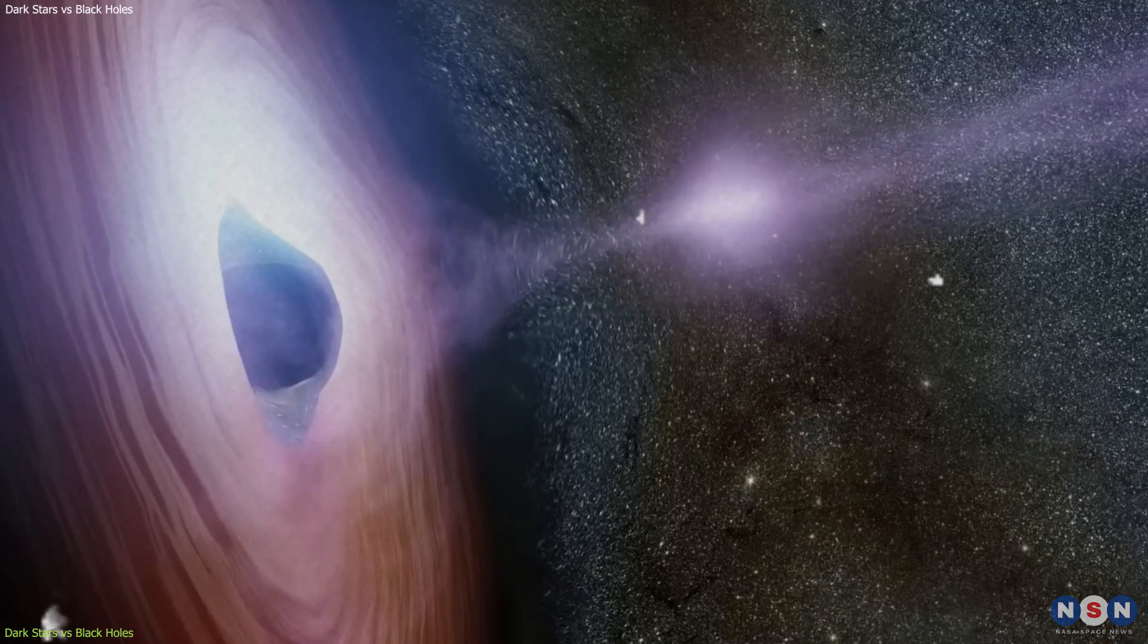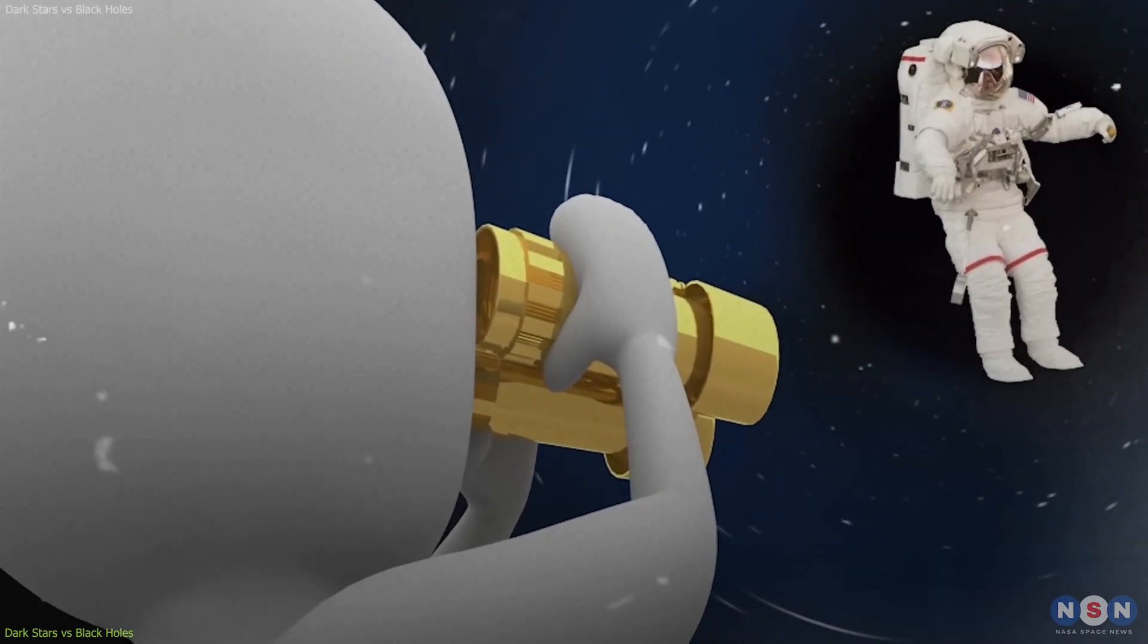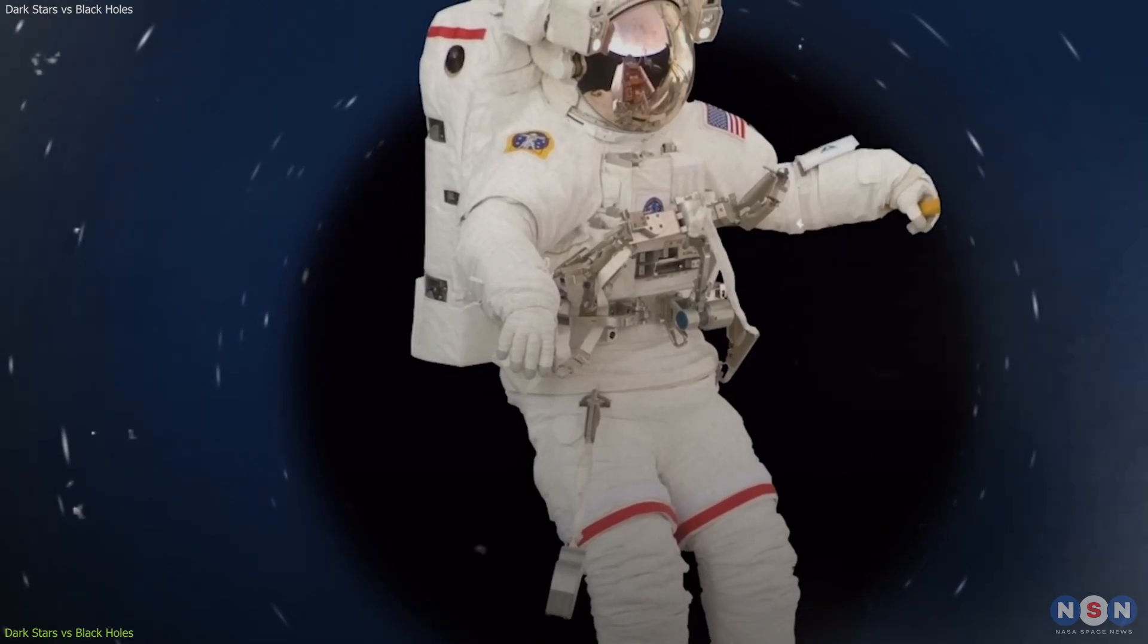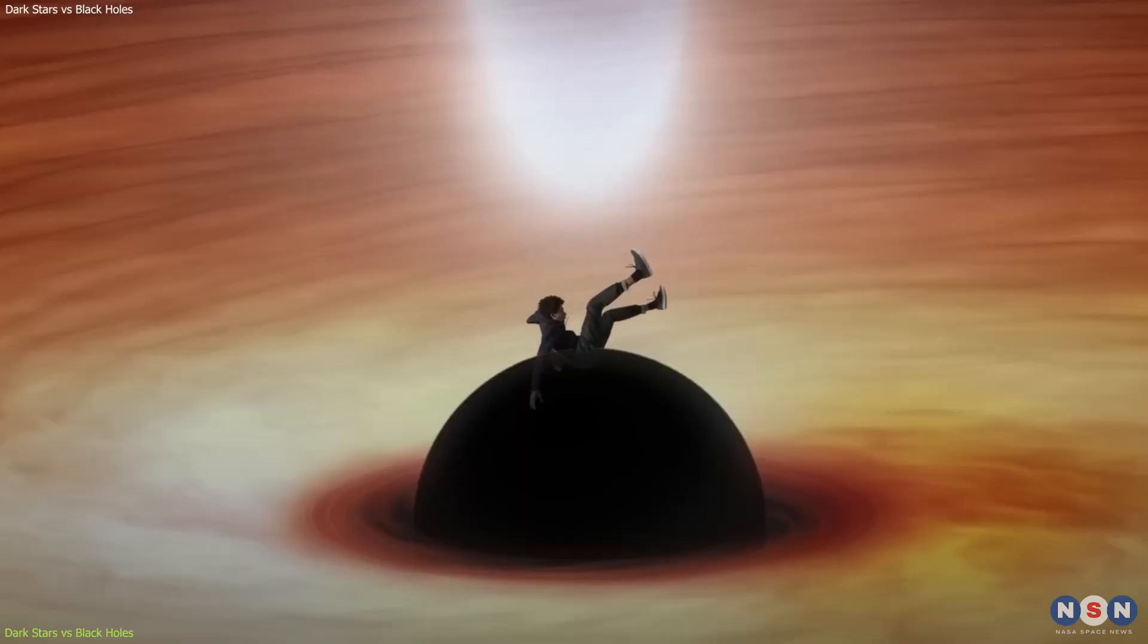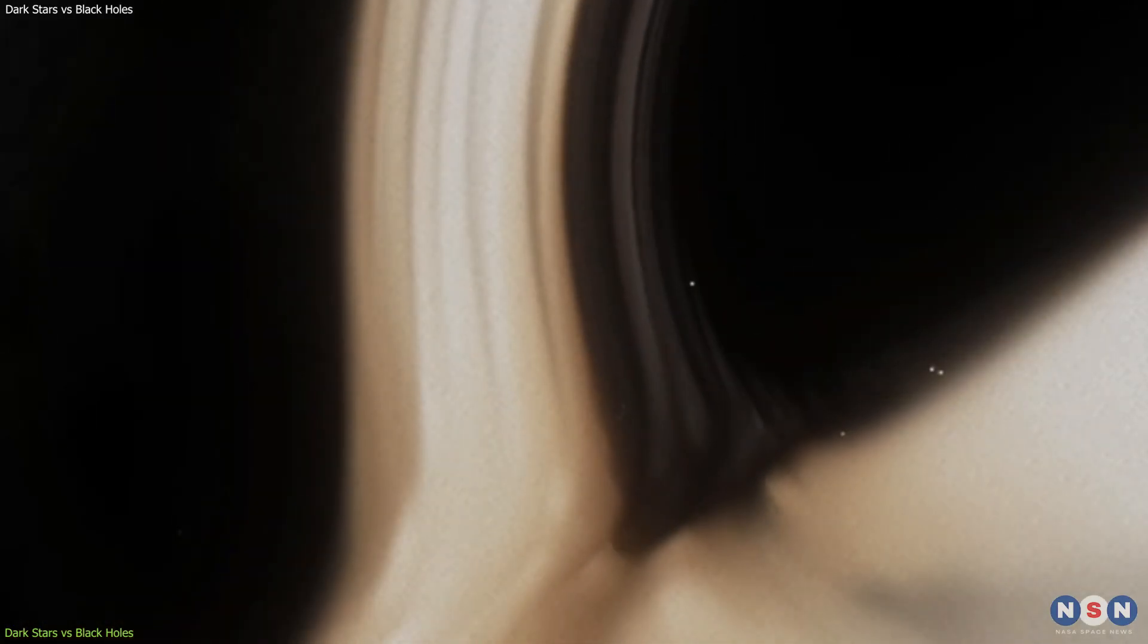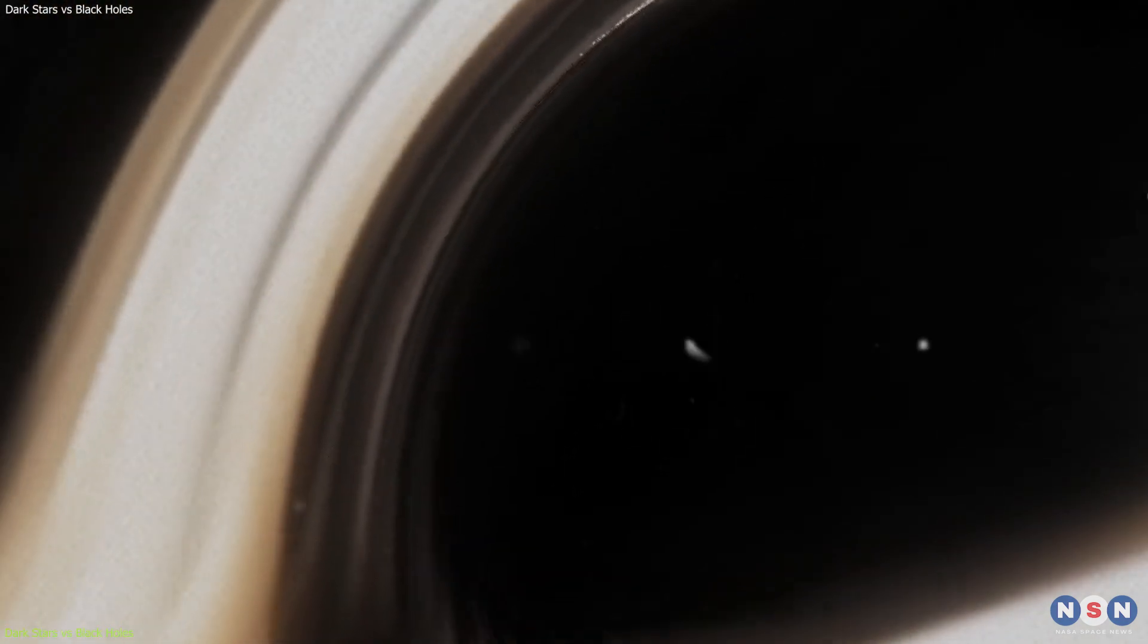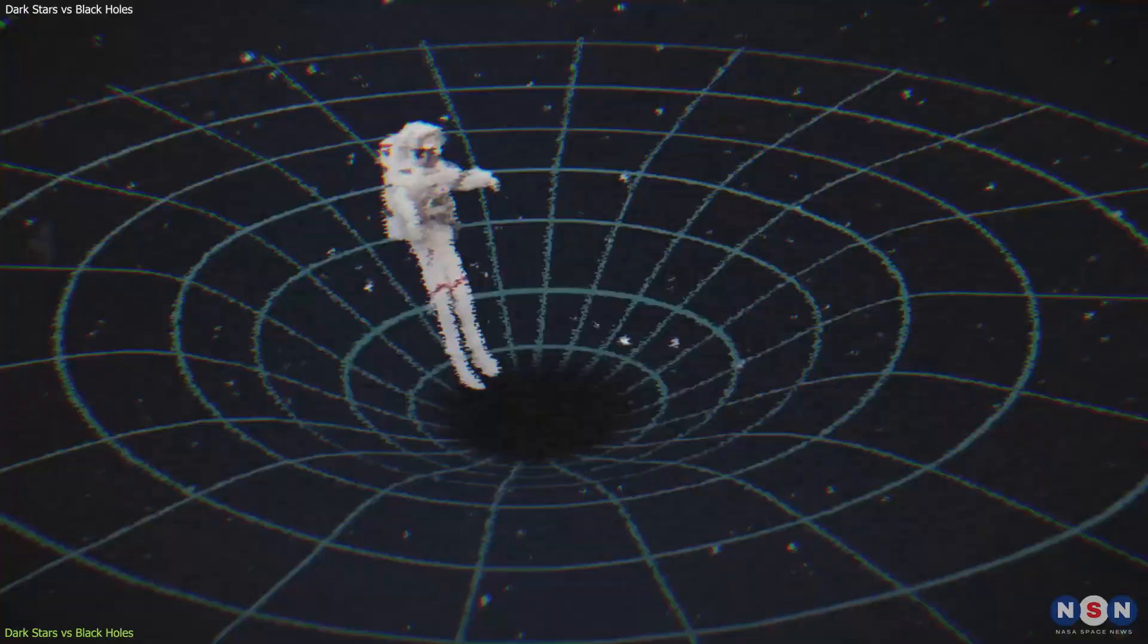The event horizon is also where things get really weird and counterintuitive. For example, if you watch someone falling into a black hole or a dark star from a safe distance, you will see them slowing down and fading away as they approach the event horizon. But if you are the one falling into a black hole or a dark star, you will feel nothing unusual until you reach the event horizon, and then you will be torn apart by the extreme gravity.